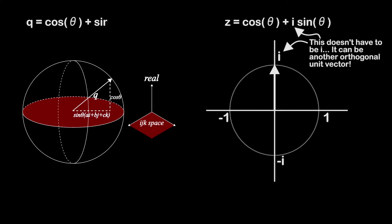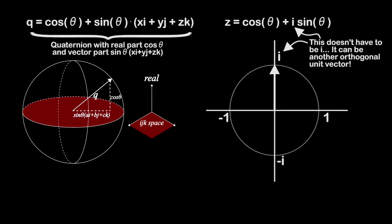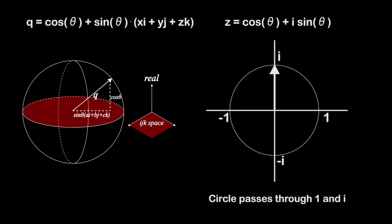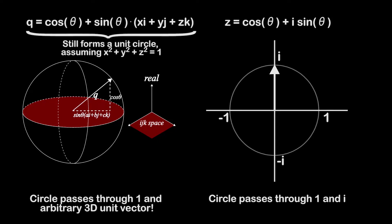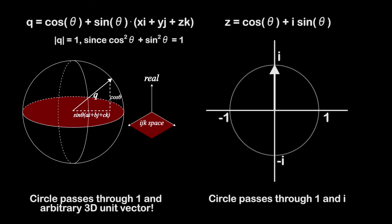q equals cosine theta plus sine theta times the vector x times i plus y times j plus z times k. We are multiplying sine theta by the vector part of a quaternion, and in fact, the whole equation describes a single quaternion whose real part is cosine theta, and vector part is sine theta xi plus yj plus zk. Now, instead of making a circle that passes through 1 and i, like complex numbers, we have made a circle that passes through 1 in any arbitrary point on the 3d unit sphere. 3d, since there are only three components in the vector part of the quaternion that is multiplying sine theta. And since this point in the ijk space is orthogonal to the real axis, we're still forming a unit circle, assuming that x squared plus y squared plus z squared equals 1. Also, this guarantees that the whole quaternion will still have length 1, since cosine squared theta plus sine squared theta equals 1 is always true.